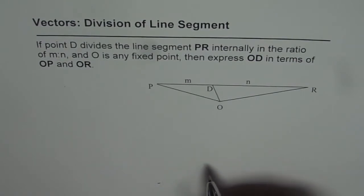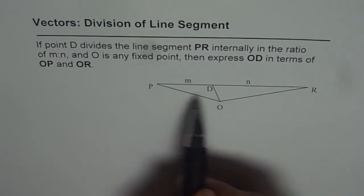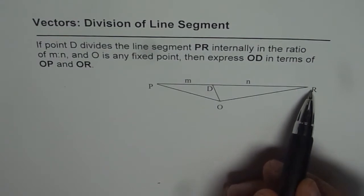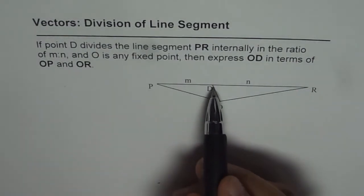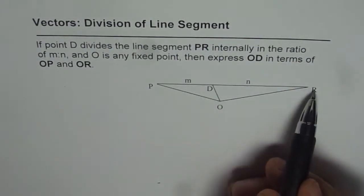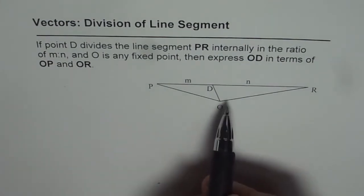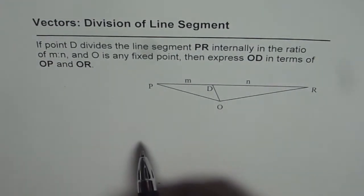Let's have a good look at the sketch which is given here. P and R are the two given points. We need to find a point D in between P and R which divides PR in the ratio of M to N.